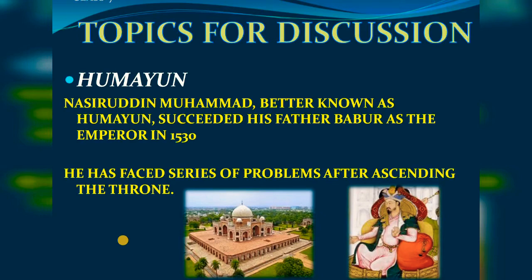Sher Shah Suri died in 1545, and his successors proved to be weak and incompetent — they were unable to sustain his empire. Taking advantage of the situation, Humayun recaptured Delhi and Agra in 1555 and re-established Mughal rule. After Sher Shah Suri died, his successors were not competent to manage the empire, so Humayun returned in 1555 and, defeating them, stabilized his Mughal reign.